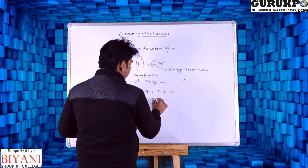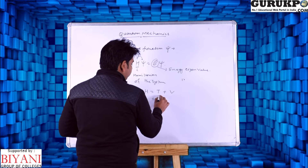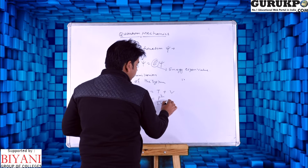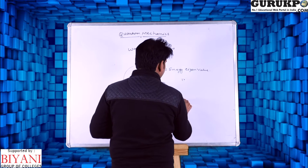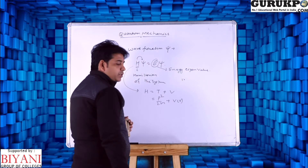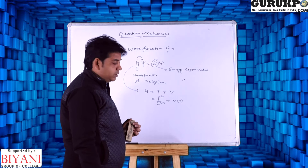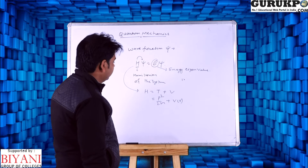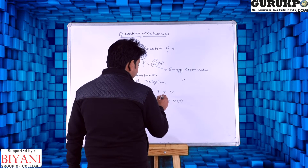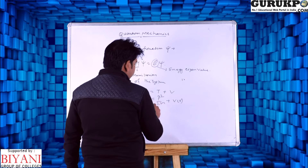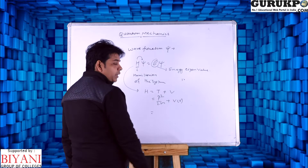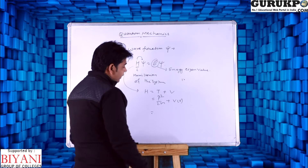H equals P squared by 2m plus V(r). The potential is a position-dependent quantity. Here P is the momentum of the system and M is the mass of the particle.